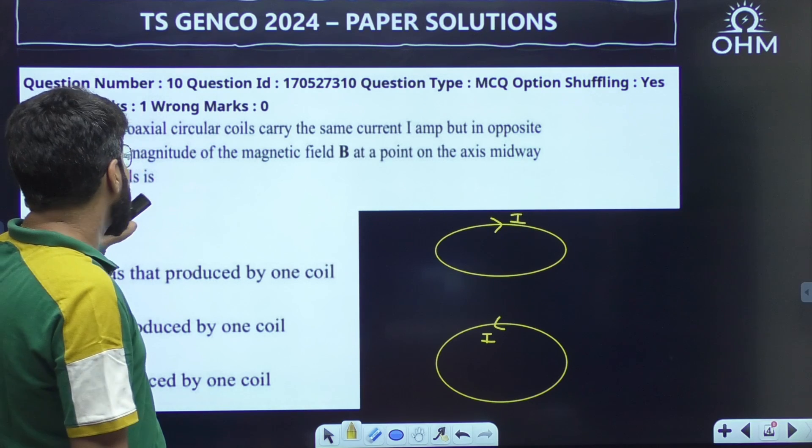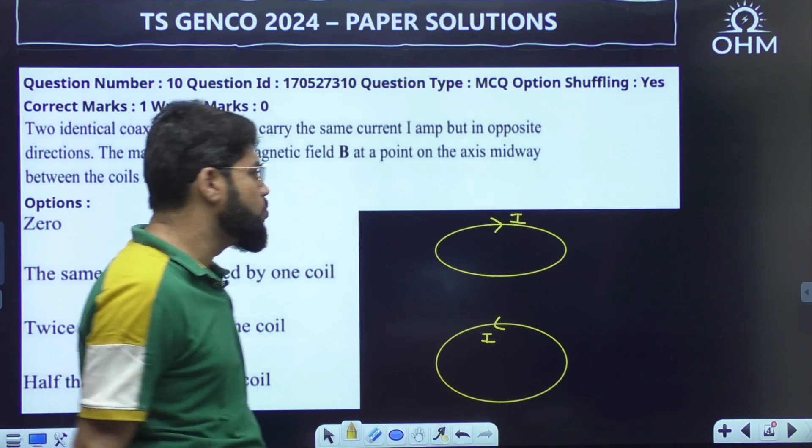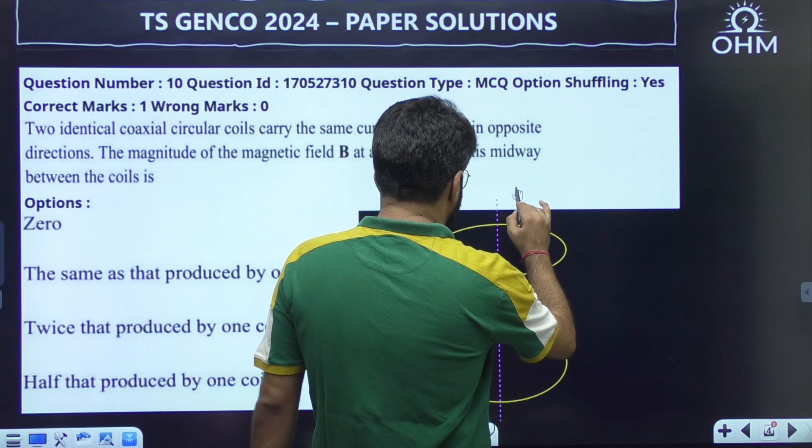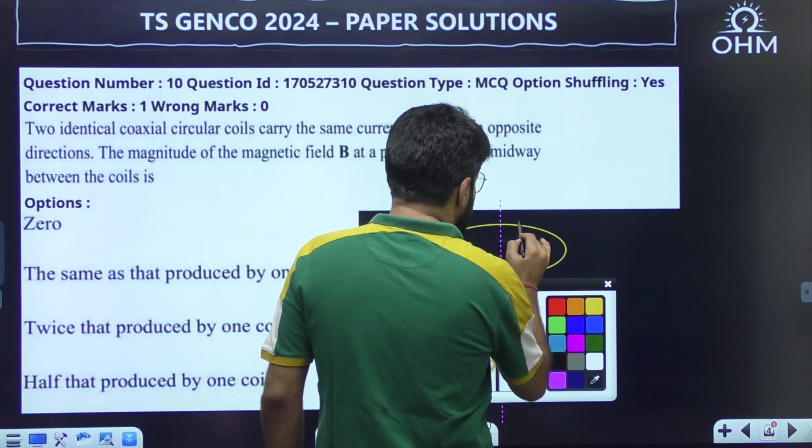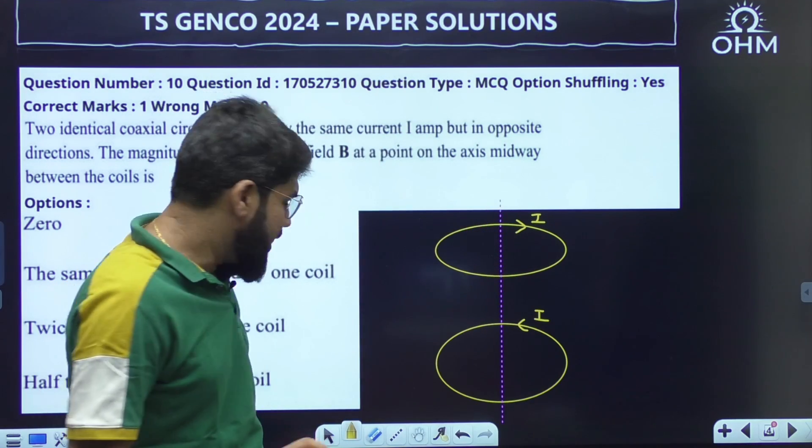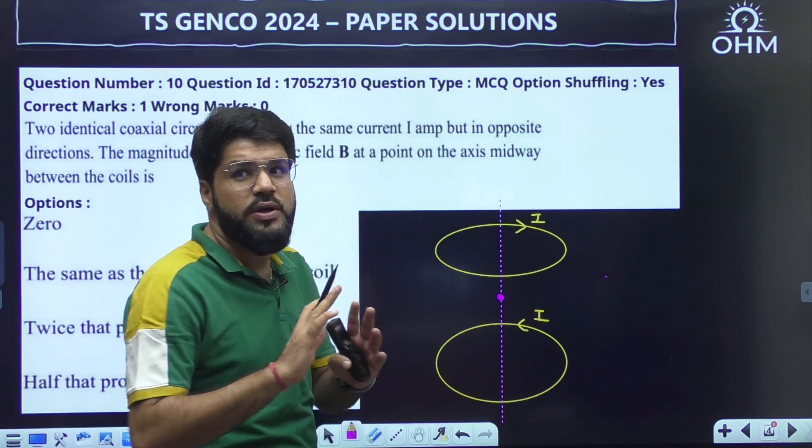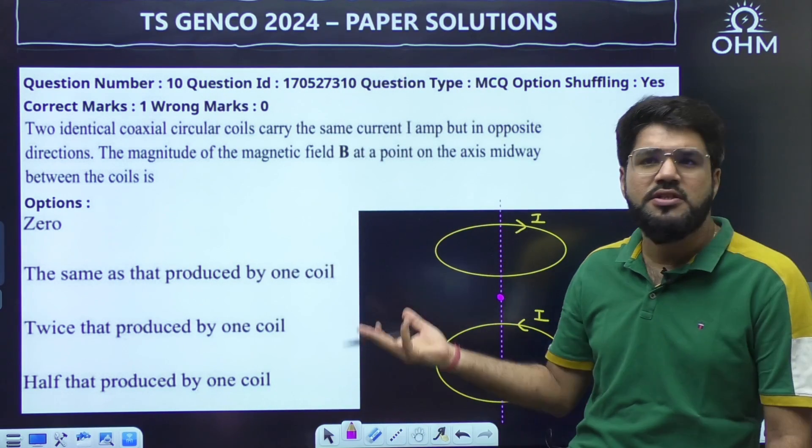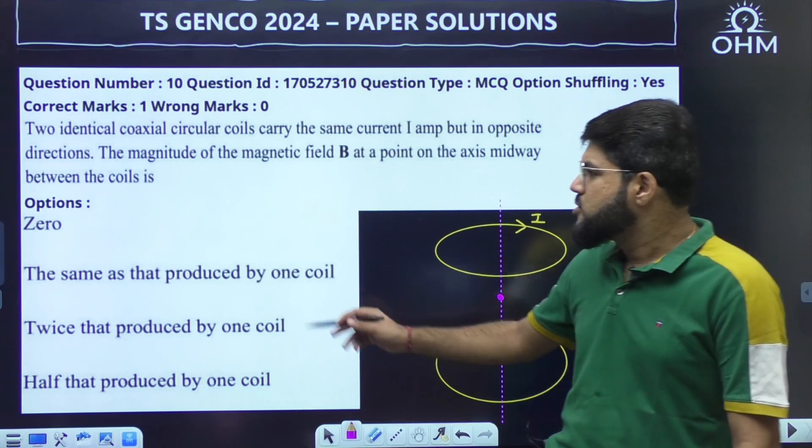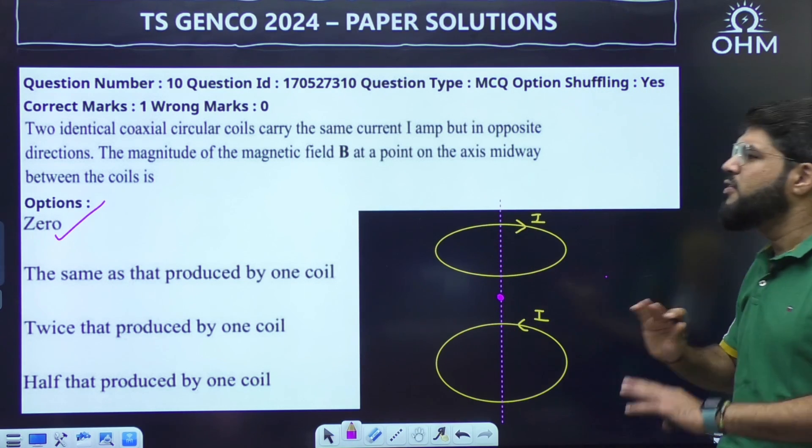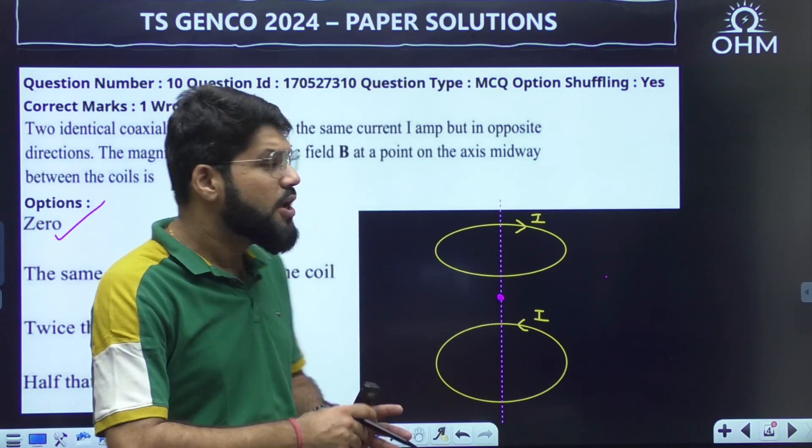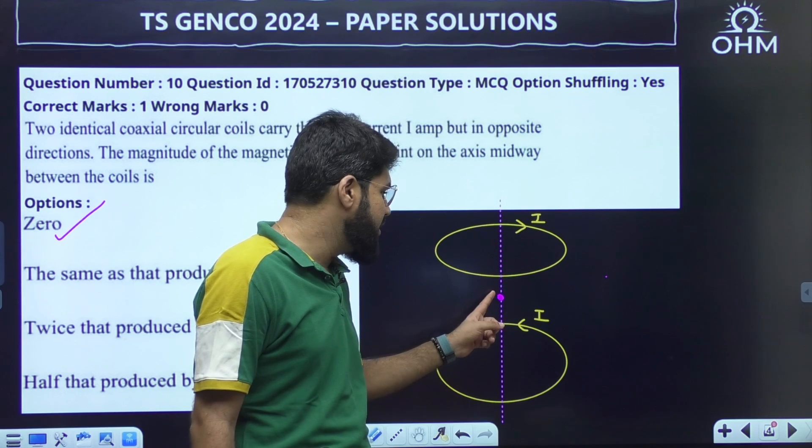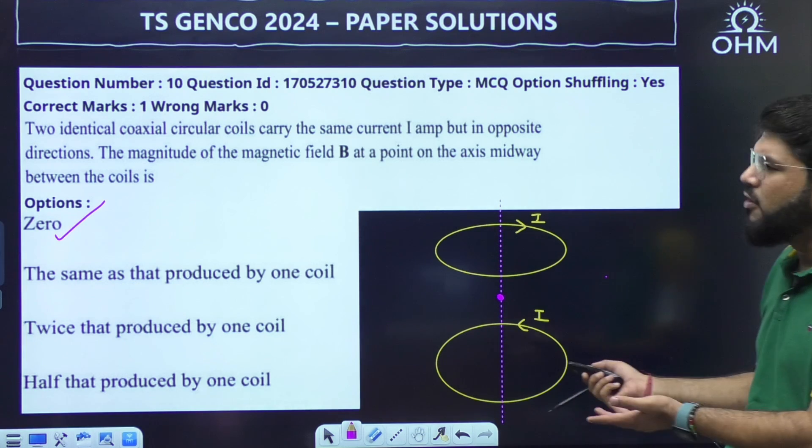They carry the same current but in opposite direction. The magnitude of the magnetic field at a point on the axis midway between the two coils. At the point on the axis which is midway, the fields will have the same magnitude because I am taking at the point on the midway, but they will have opposite direction. The field calculation due to circular conductors is commonly derived from the Biot-Savart law or for some symmetric configurations from the Ampere circuit law. But here we don't need to apply any formula. Symmetry problem. Simply you can say the answer is zero because both the currents are in opposite direction and equal distance, midway between the two coils.